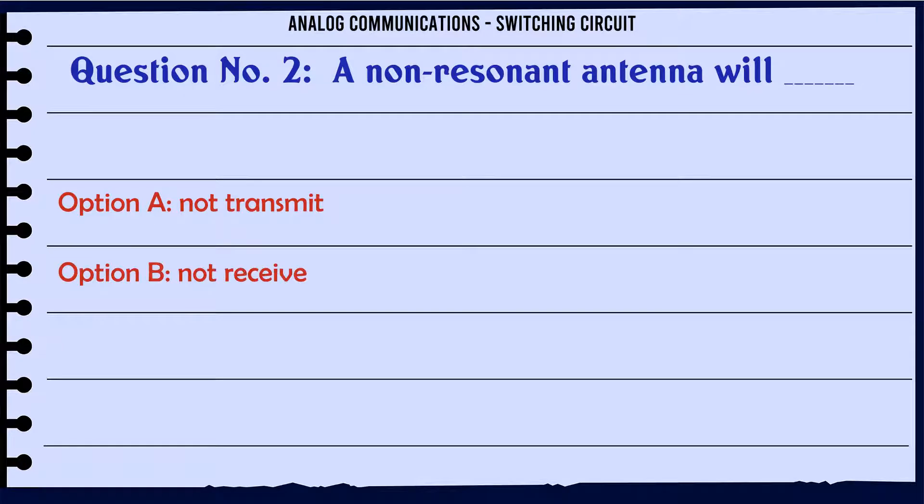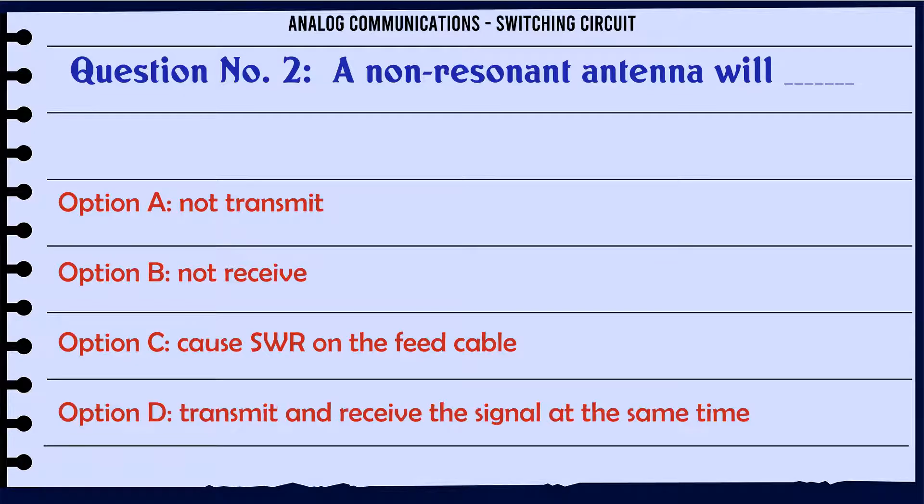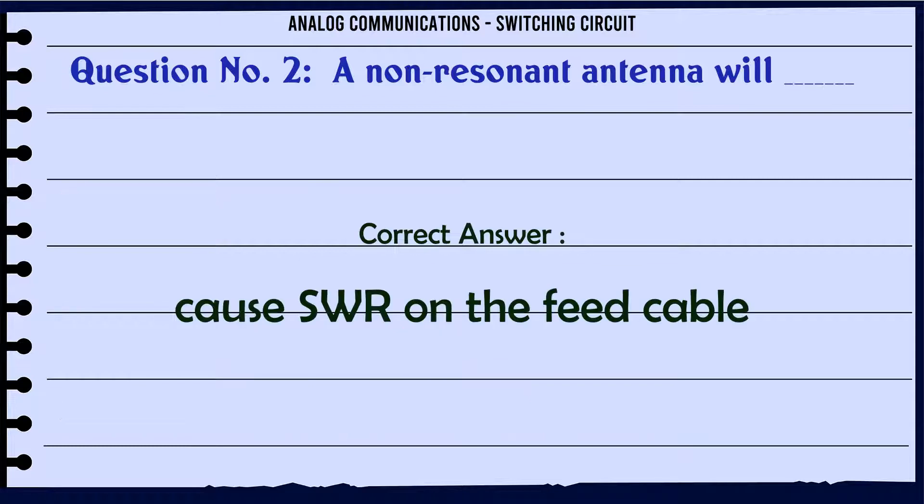Question: A non-resonant antenna will. Option A: Not transmit. Option B: Not receive. Option C: Cause SWR on the feed cable. Option D: Transmit and receive the signal at the same time. The correct answer is Cause SWR on the feed cable.